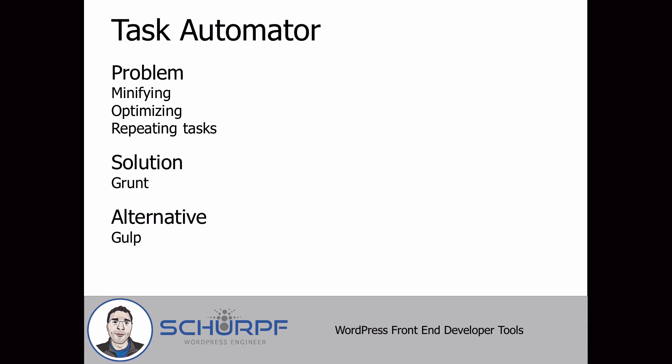The next point I want to talk about is task automation. There's lots of small stuff we do all the time — minifying files, optimizing images, moving files around. You don't want to do this manually every time. If you catch yourself copying a JavaScript file, going to some online service to minify it, and coming back, or even just hitting a keyboard shortcut in your editor — you probably want an automated task runner.